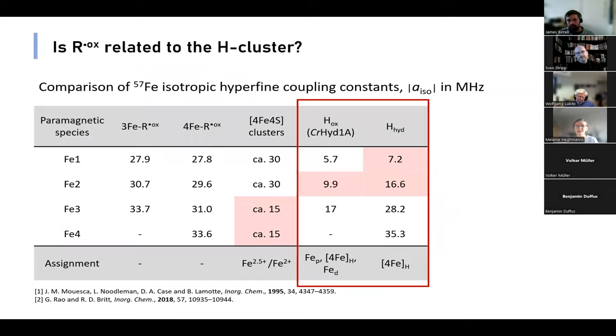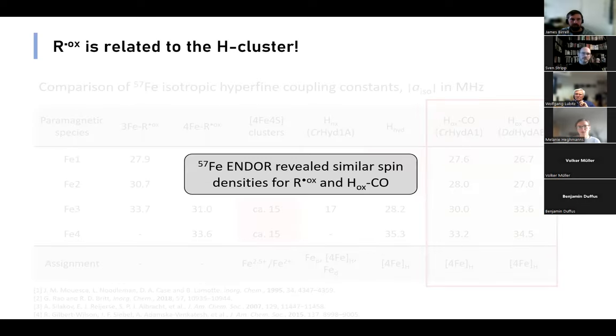So now there's only one cluster left where R^ox might be associated with, and this is the H-cluster. Therefore, we compared our isotropic hyperfine coupling constants to well-known H-cluster states reported in the literature. Here we have H-ox, where the spin density is mainly located on the di-iron subsite, and H-hyd where it is on the 4Fe cubane of the H-cluster. In both cases, it doesn't fit very well to our results. However, when we take into account H-ox-CO state from two different organisms, the hyperfine coupling values are very well aligned with our simulations. This shows us that R^ox and H-ox-CO have the same or similar spin density distribution.